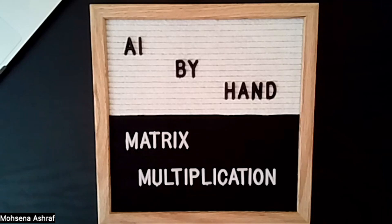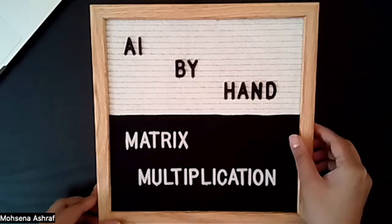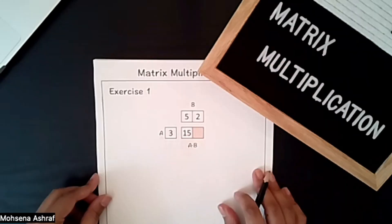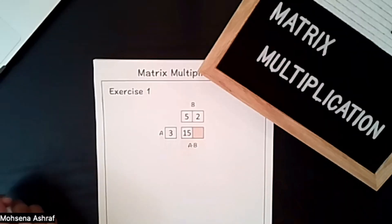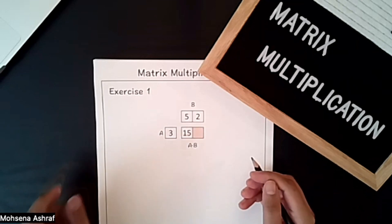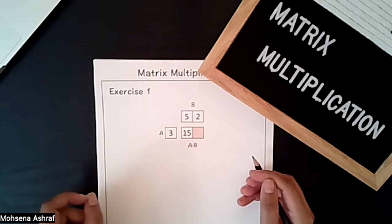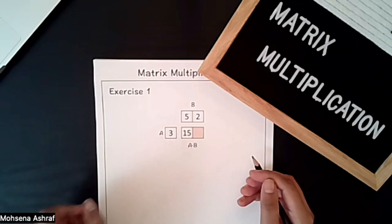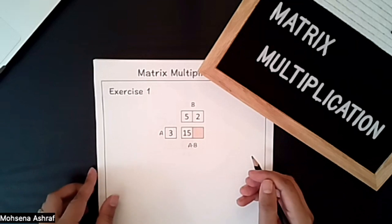Hi everyone, welcome to the AI by Hand series. Today we are going to learn about matrix multiplication. Matrix multiplication is a fundamental operation in linear algebra and it is essential for solving systems of linear equations and various other mathematical and computational tasks.